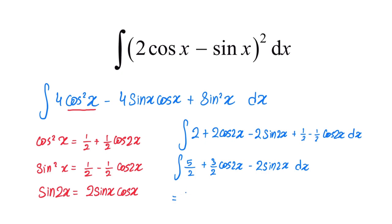5 over 2, its integral will be 5 over 2x. 3 over 2 cosine 2x—the integral of cosine is sine, so 3 over 2 sine 2x. And we have this 2 over here, the coefficient of x, so we're going to divide by it. So it's 3 over 4 sine 2x.